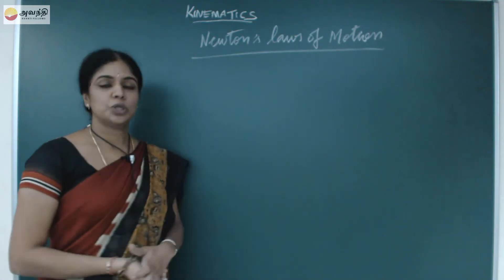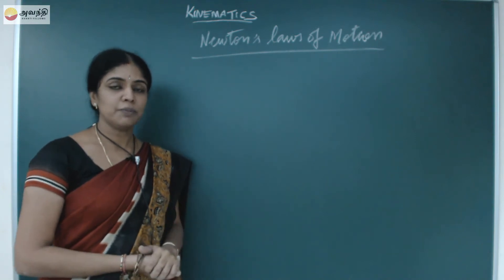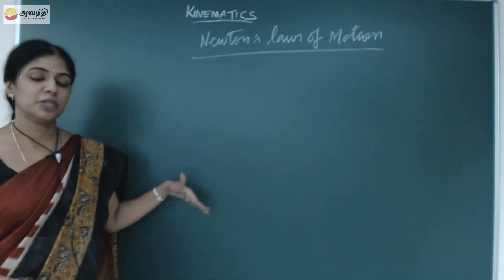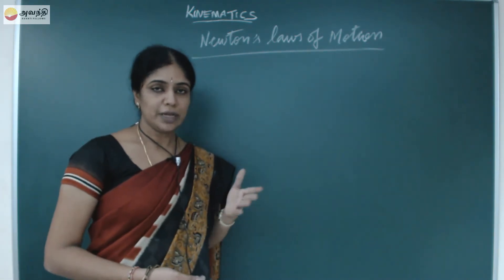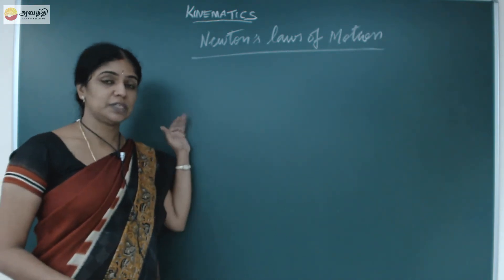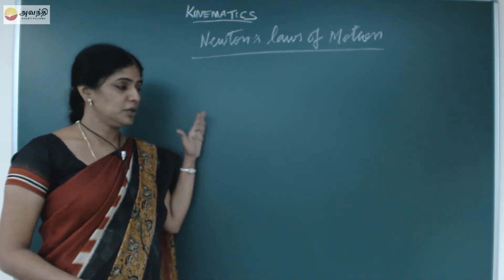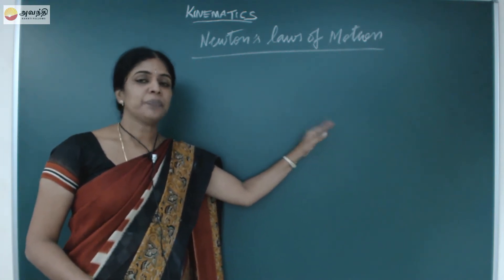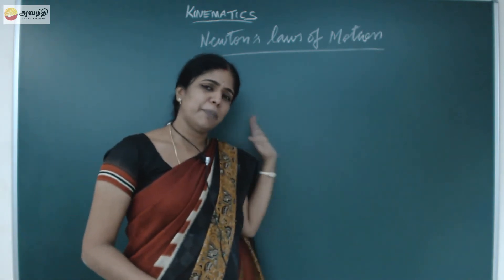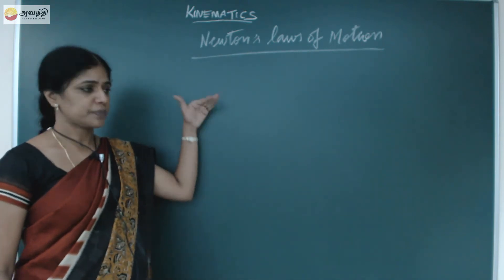Now we look at Newton's laws of motion. First, we will see what external force is required for an object to be in motion. Aristotle told us that any object in motion requires an external force to move with a uniform velocity — one object needs an external force to maintain uniform velocity without any change in velocity.